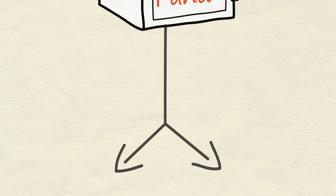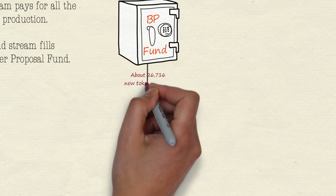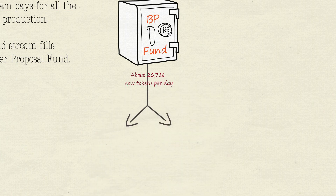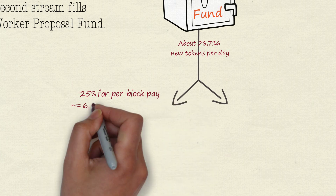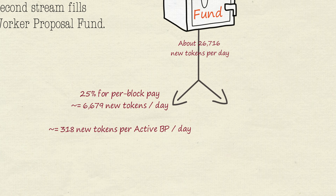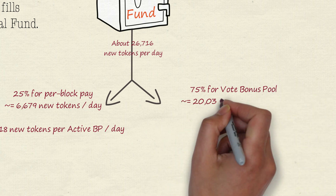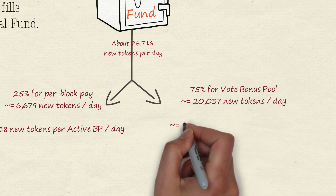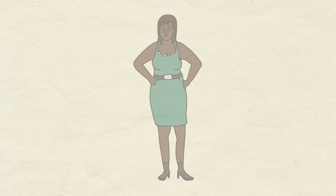Let's look at block producer pay more closely. As of the first couple of days, we're going to see about 26,000 new tokens a day going to pay for block production. A quarter of that is per block pay — about 6,600 new tokens, or 318 new tokens per active producer per day. And then 75% for vote bonus, about 20,000 new tokens, or about 200 tokens for each percent of the vote per day.